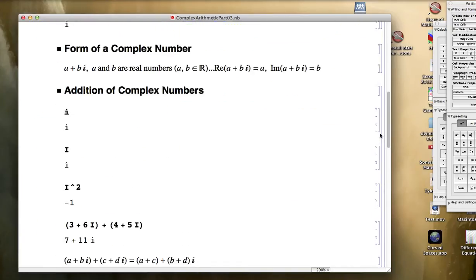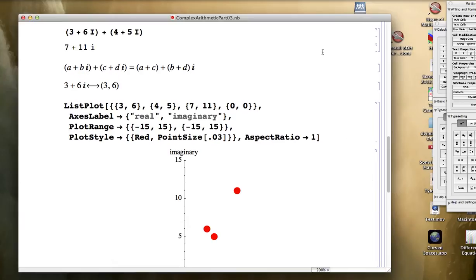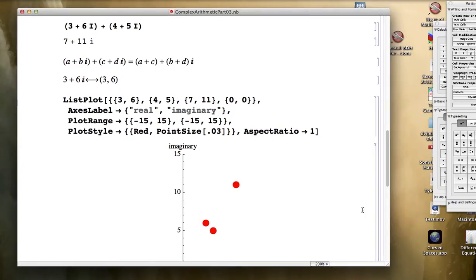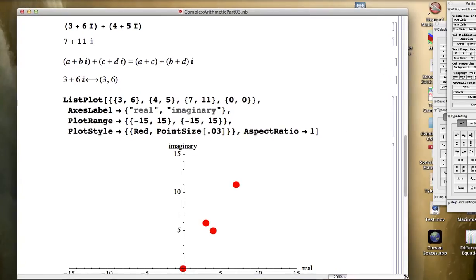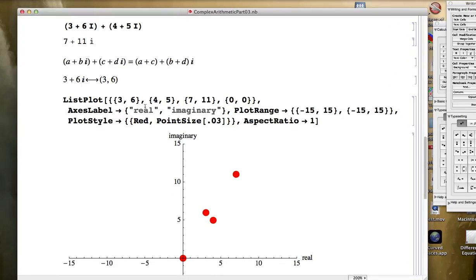In the last video, we looked at defining something called the complex plane as a way of representing complex numbers. The example we were thinking about was taking the complex number 3 plus 6i and adding the complex number 4 plus 5i to get 7 plus 11i.